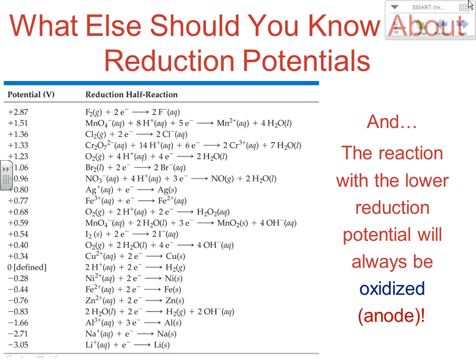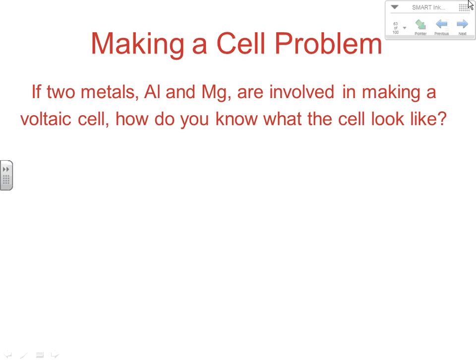If you have a reaction and just know the two substances involved but don't know which is oxidized or reduced, you can look up the reduction potentials for the two reactions. The one with the lower reduction potential will be at the anode and oxidized; the one with the higher reduction potential will be at the cathode and reduced. So if you know the substances involved in a spontaneous reaction, you can figure out exactly what must be happening.